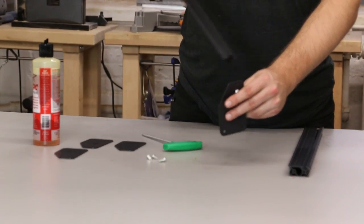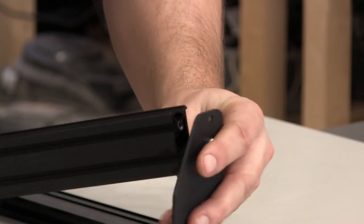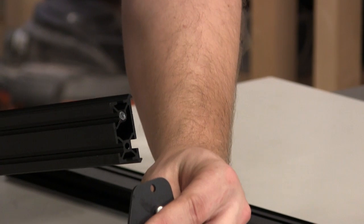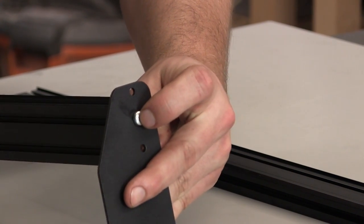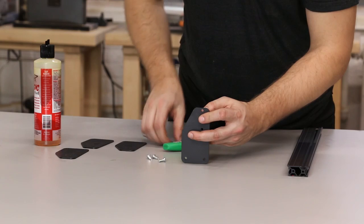The orientation of these end plates and rails is very important. You'll want the V-shaped part of the maker slide to face the outside, which corresponds to the flat side of the end plate.